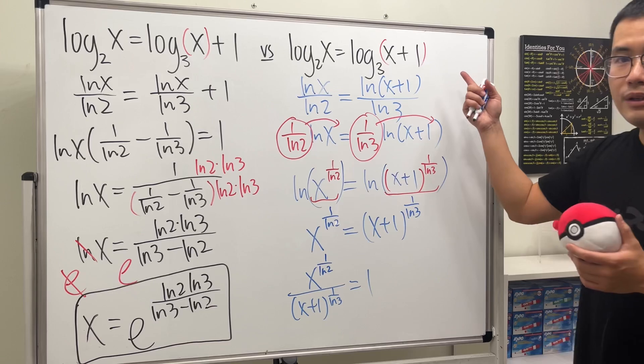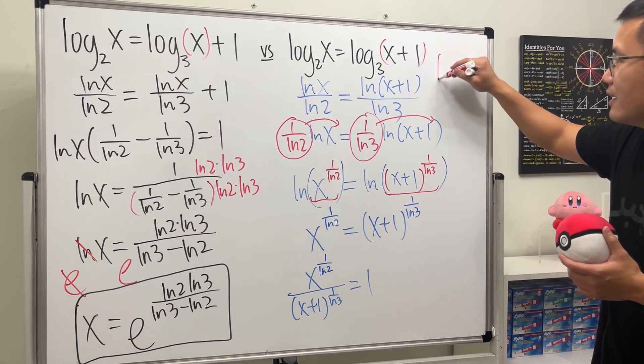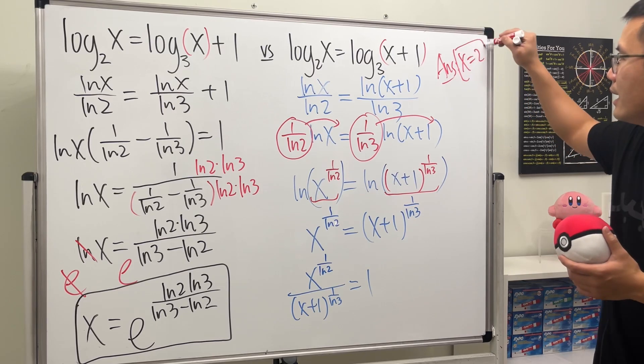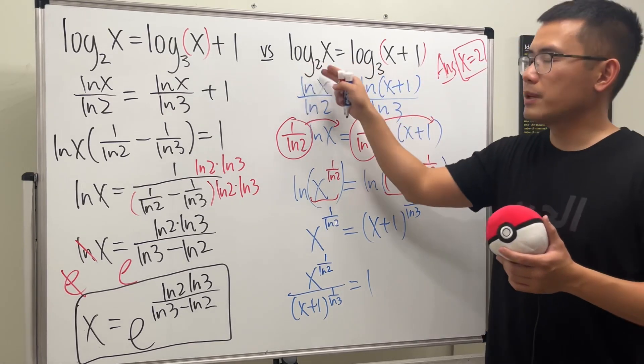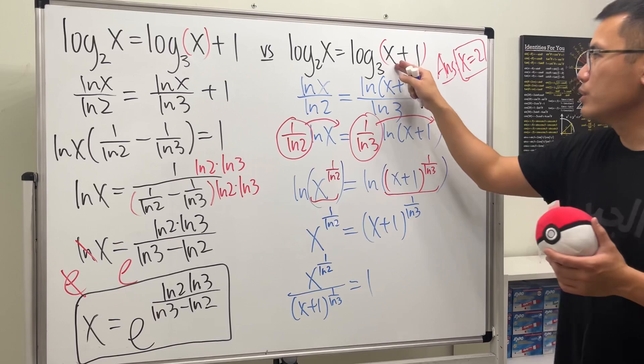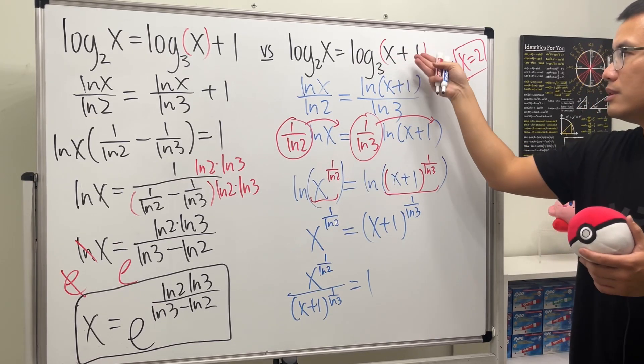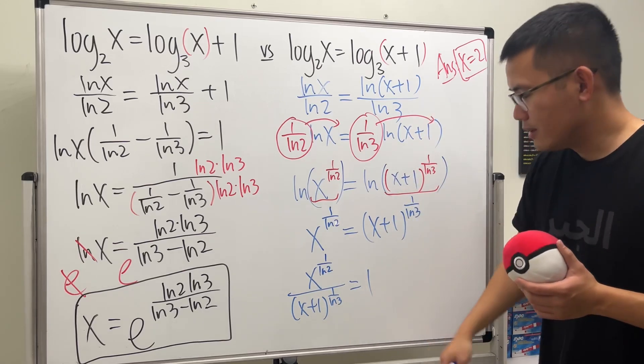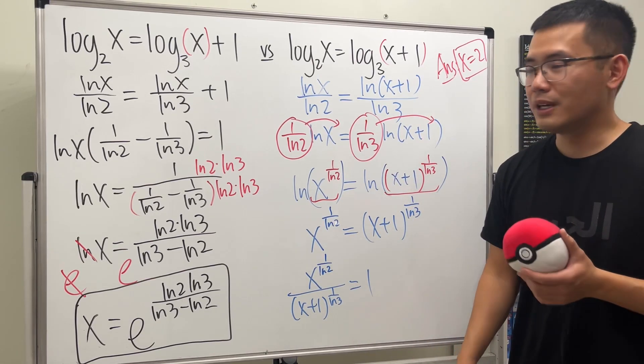Oh. Yeah, I know the answer. What's the answer? x is equal to 2. Yeah, I know it. Why? You put 2 here, log base 2 of 2 is equal to 1. You put 2 here, 2 plus 1 is 3. Log base 3 of 3 is equal to 1. We know the answer. But how do we do it? What's the systematic approach? I have no idea.